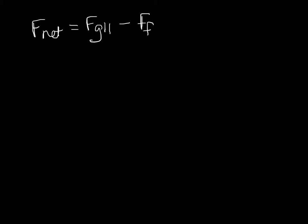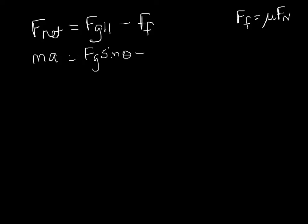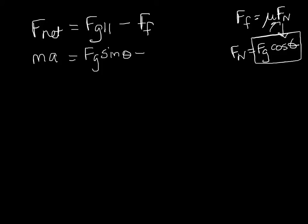Our net force equals the force of gravity parallel minus the force of friction. So: mass times acceleration equals Fg times the sine of the angle, minus the force of friction. Remember, force of friction is mu — our coefficient of friction — times the normal force. From before, we found that our normal force is Fg times cosine theta. So this becomes mu times Fg times cosine theta, combining our friction equation with our normal force equation.